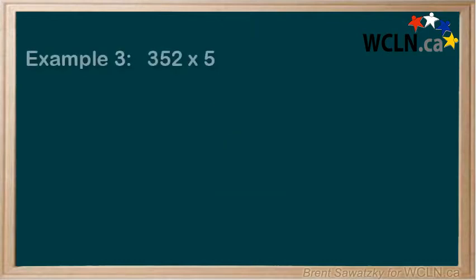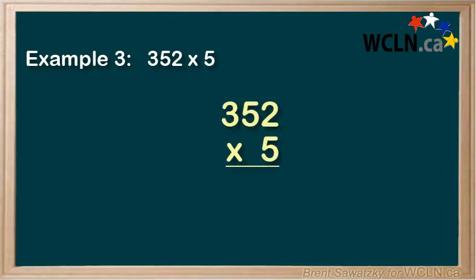One last example. Example 3: 352 times 5. Again, let's line it up. We're multiplying the 5 on the bottom by each of the digits in the upper number, right to left again. 5 times 2 is 10.